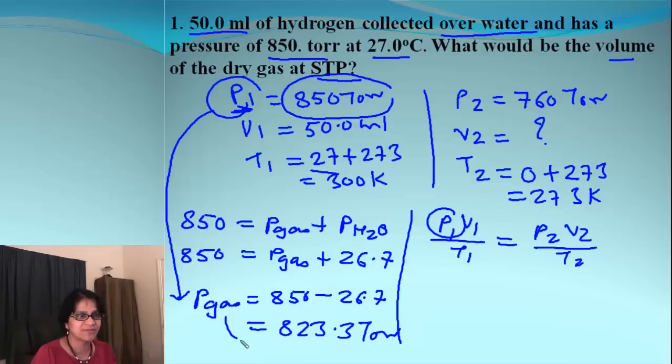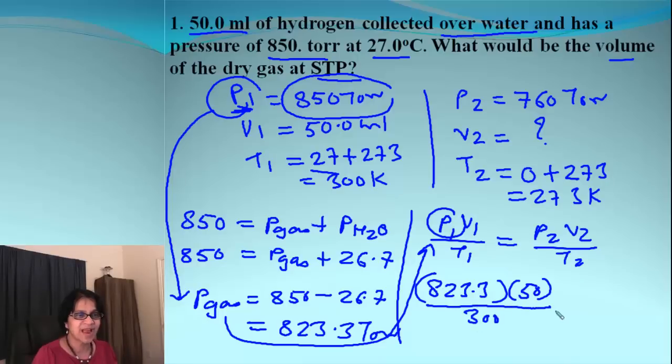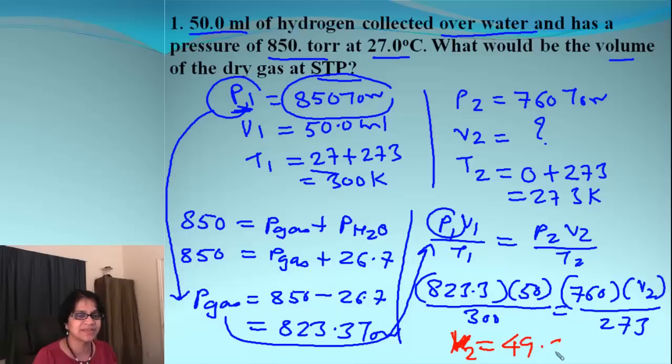So that is 823.3 times the volume which is 50 divided by the temperature which is 300, and over here P2 is 760. We need to find out V2 and temperature is 273. So when we actually solve, plug and check and solve, we end up getting value for V2 as 49.3 milliliters.